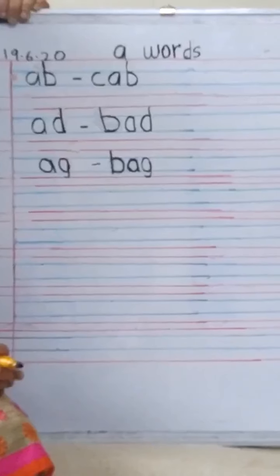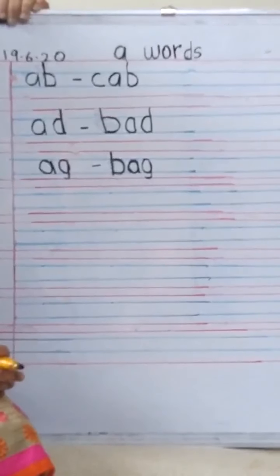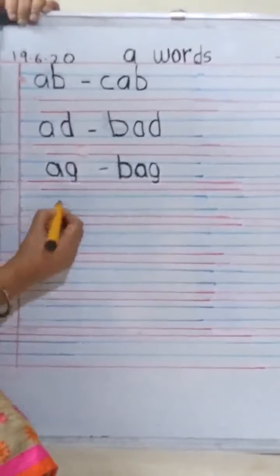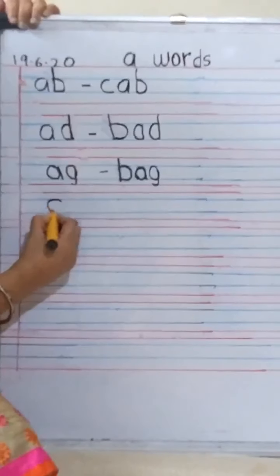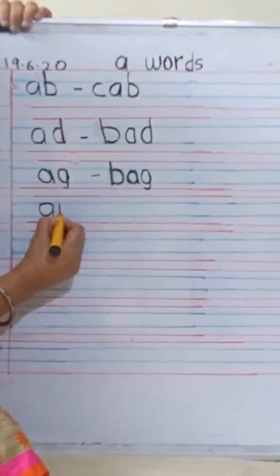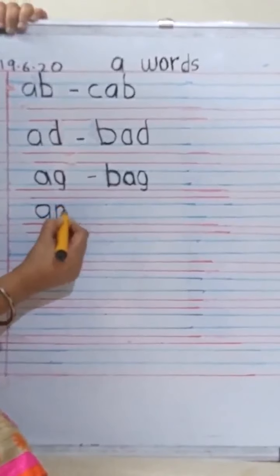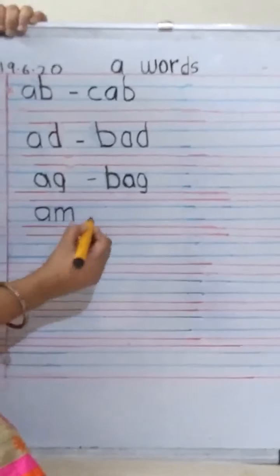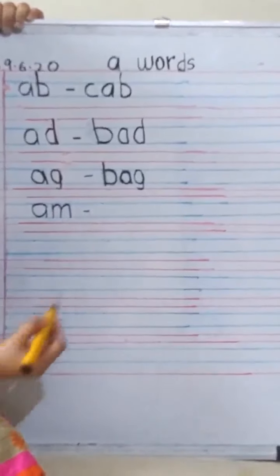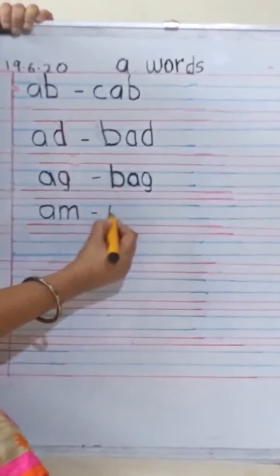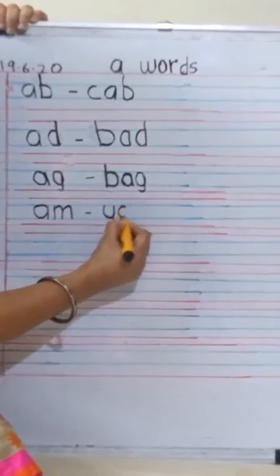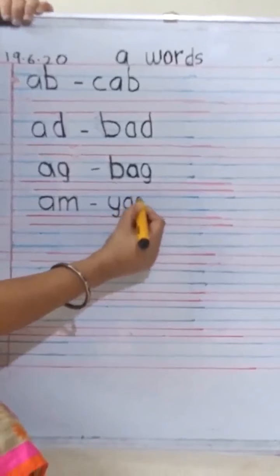Now the next. So now we are going to write the next A word. That is AM, AM. A, M. Yes. Next to the A, M, a standing line. Can you see it is being written only in the blue lines. AM, give a small dash, and then we write a YAM. Y, A, M. YAM.